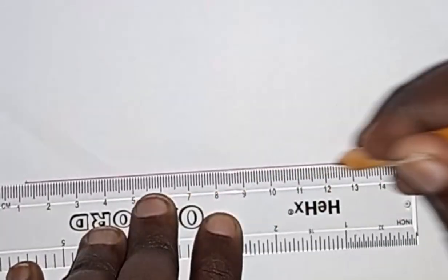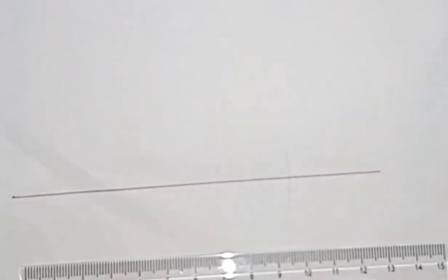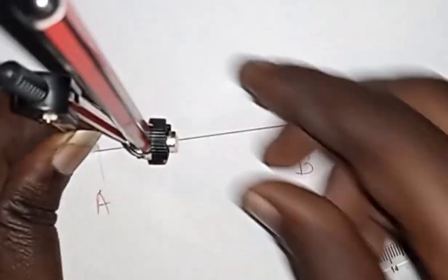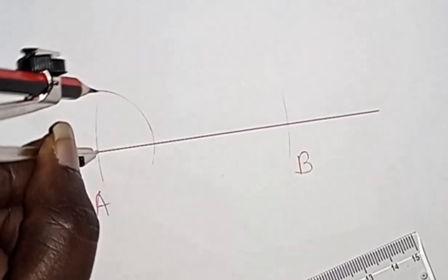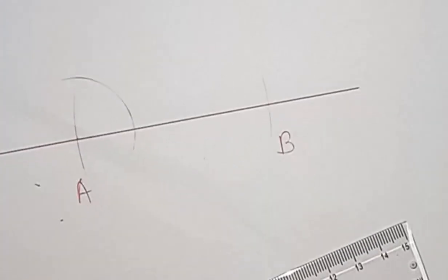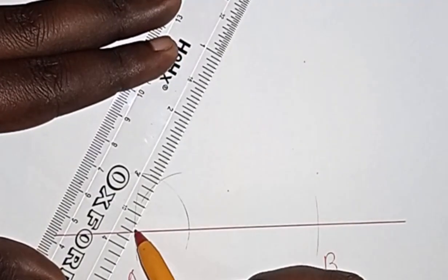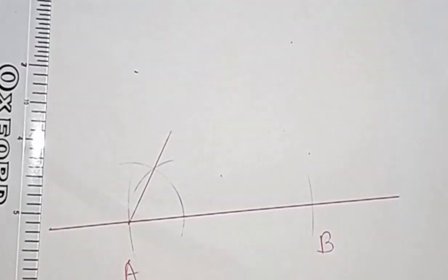Draw the base line of seven centimeters. Using your compass, draw an arc from point A that intersects line AB. Without changing the compass radius, draw another arc from point A that intersects the previous arc. Connect point A to the closest point of intersection to form a 60-degree angle at point A. Repeat the same process to draw a 60-degree angle at point B.